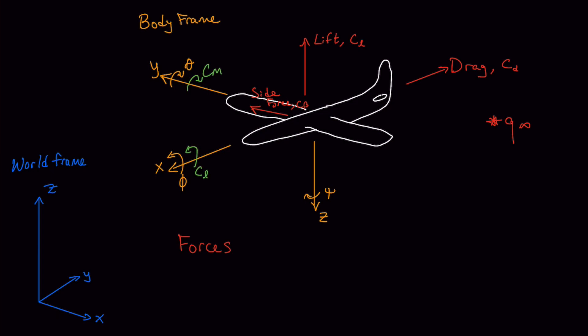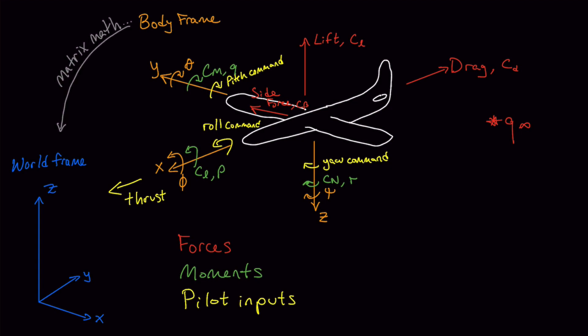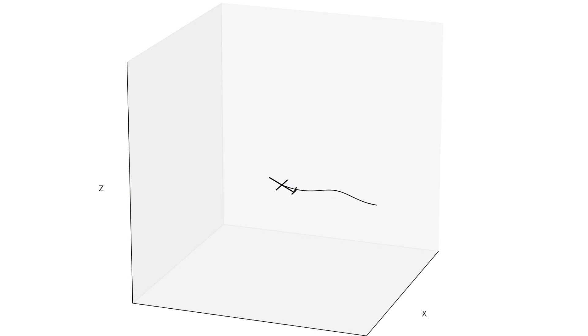We'll also add a stabilizing pitching moment, a rolling moment, and damping moments based on angular rates. Pilot inputs are modeled as throttle, producing forward thrust, plus roll, pitch, and yaw moments. Once the forces and moments are calculated in the body frame, they're rotated into the world frame and integrated forward in time with a discrete fourth-order Runge-Kutta method. With all of this in place, we have our first real-time simulation written in Python put together.